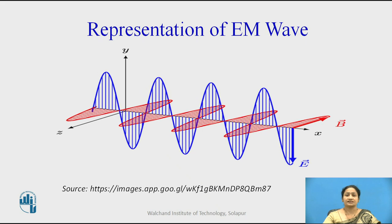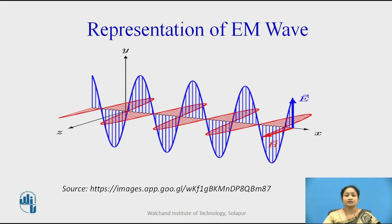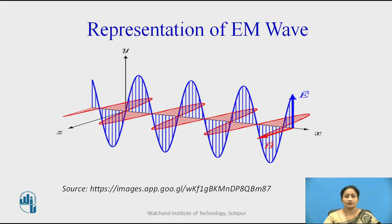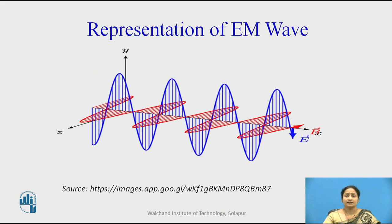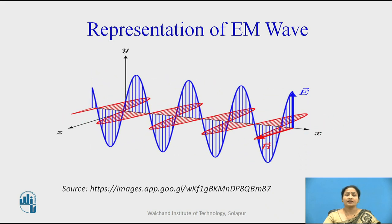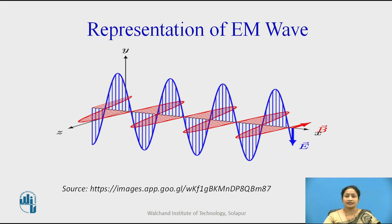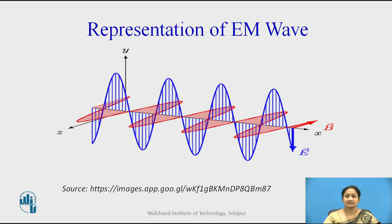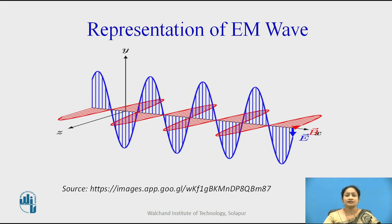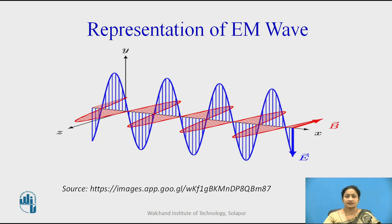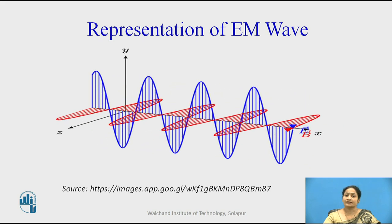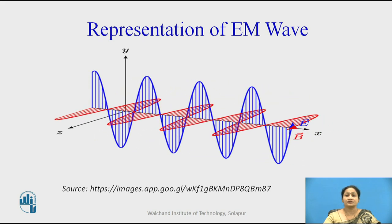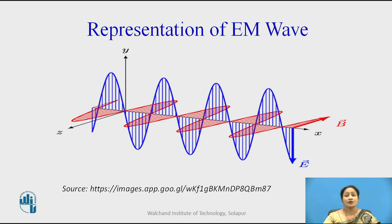The same representation can be seen with sinusoidal time-varying field waves. Here, the electric field is represented in the y-direction, the signal is propagating in the x-direction, and the magnetic field is in the z-direction. The magnetic field is represented by the red color and the electric field is represented by the blue lines.